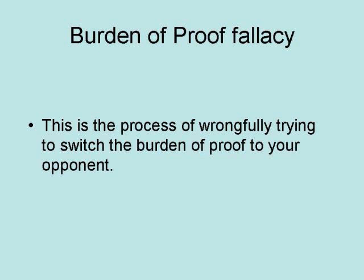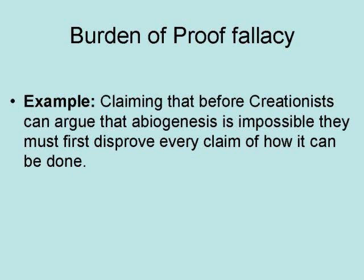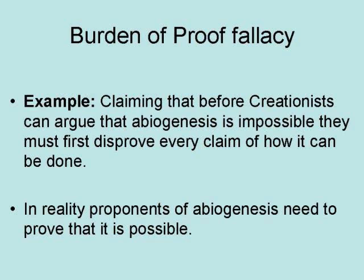The burden of proof fallacy is the process of wrongfully trying to switch the burden of proof to your opponent. A good example of a burden of proof fallacy is claiming that before creationists can argue that abiogenesis is impossible, they first must disprove every claim of how it can be done. In reality, proponents of abiogenesis need to prove that it is possible.